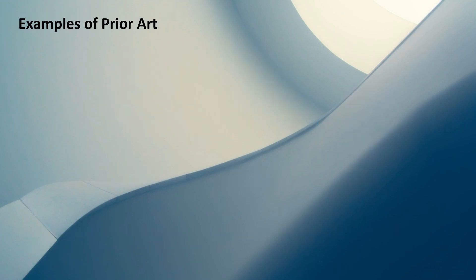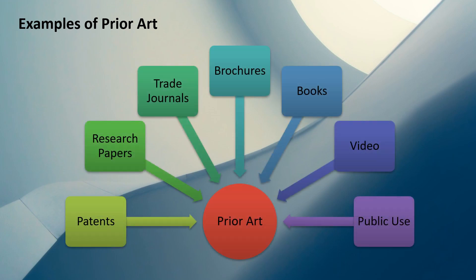Now let's understand what the examples of prior art are. Prior art can be patents — whether patent applications that are yet to be granted or patents that have been granted. If they are in the public domain and published, they are considered prior art. Research papers, including scientific literature or technical papers published in journals, are also examples of prior art. Trade journals, which are industry-specific documents informing about the latest technological advancements, are also considered prior art.